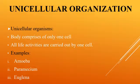What is unicellular organization? In unicellular organization, unicellular organisms exist, meaning their body is composed of only one single cell. 'Uni' means one. All life activities are carried out by that one cell. Examples are amoeba, paramecium, and euglena.